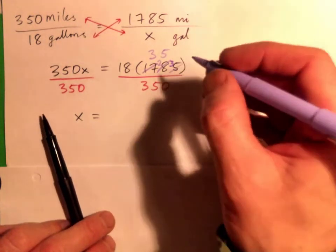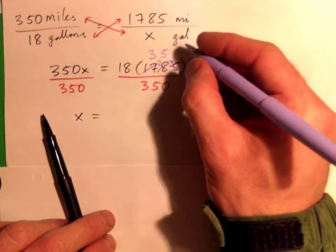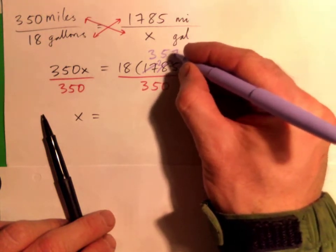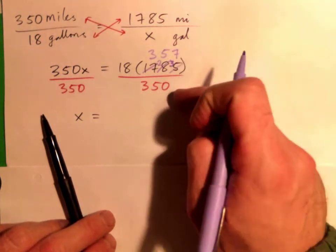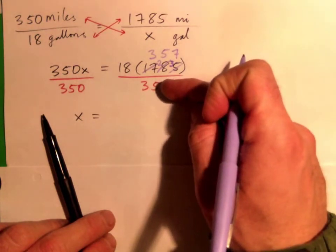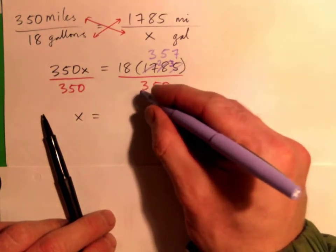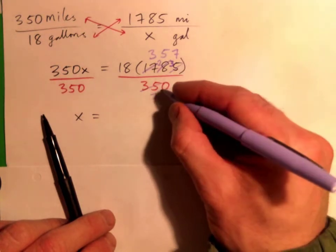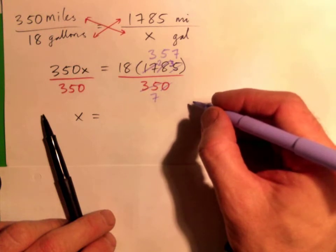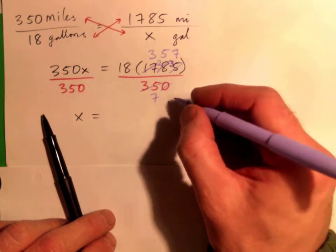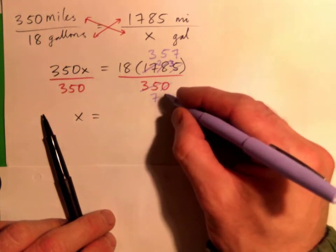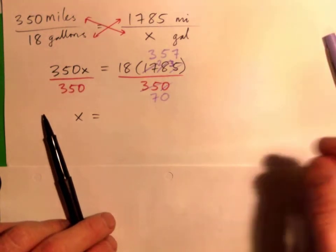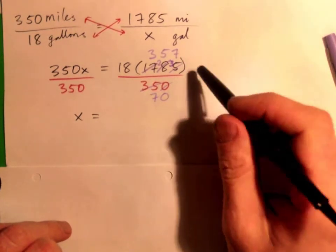And 5 into 35 is 7, right? And down here, 5 into 35 is 7, yep. And 5 into 0, 5 into 0 is 0. So I've simplified it a little bit.